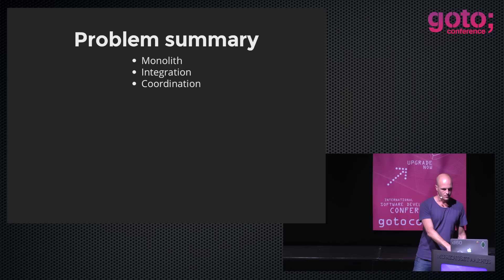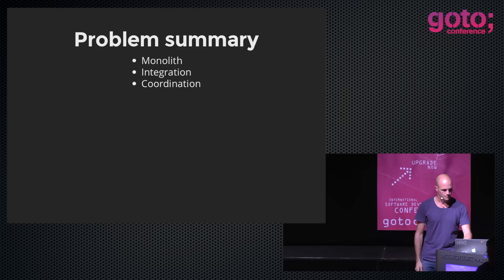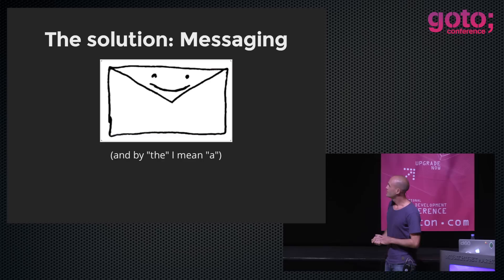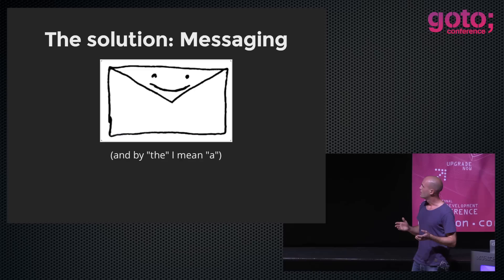To sum it up: you're struggling with a monolith, perhaps you have some integration problems, and you have perhaps a problem coordinating your logic or reasoning about which processes are going on in your system. One solution — and I don't want to be so bold as to claim this is 'the' solution — the best way I know of at the moment to handle these things is by using messaging in intelligent ways.